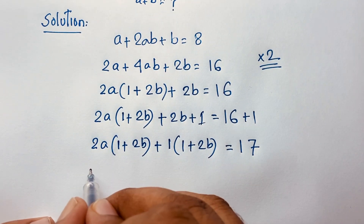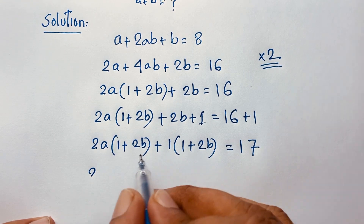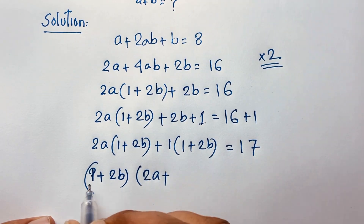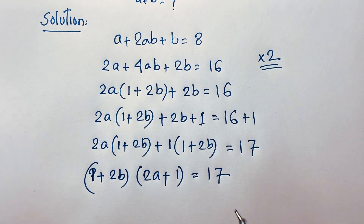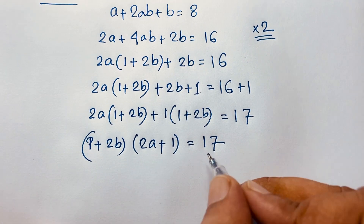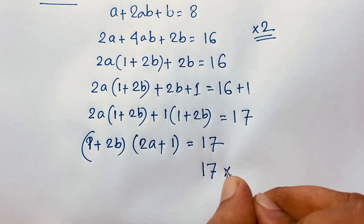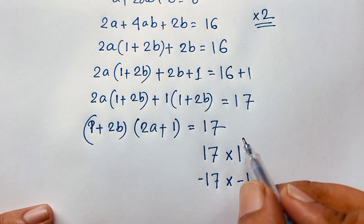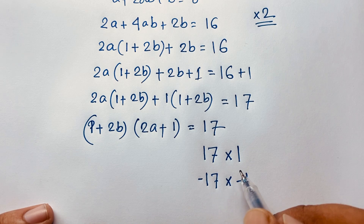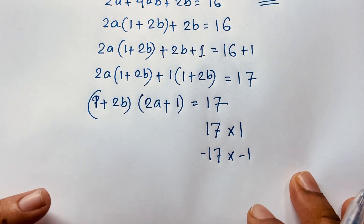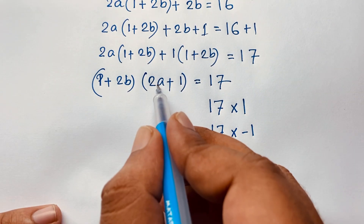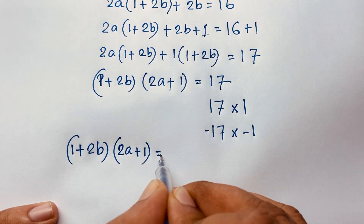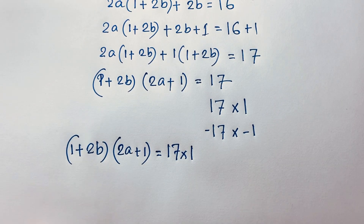Now you can see here (1 plus 2B) is common. So taking (1 plus 2B) as common, it will be (1 plus 2B) times (2A plus 1) is equal to 17. Now we find the factor pairs of 17: it will be 17 times 1, and it will be negative 17 times negative 1.